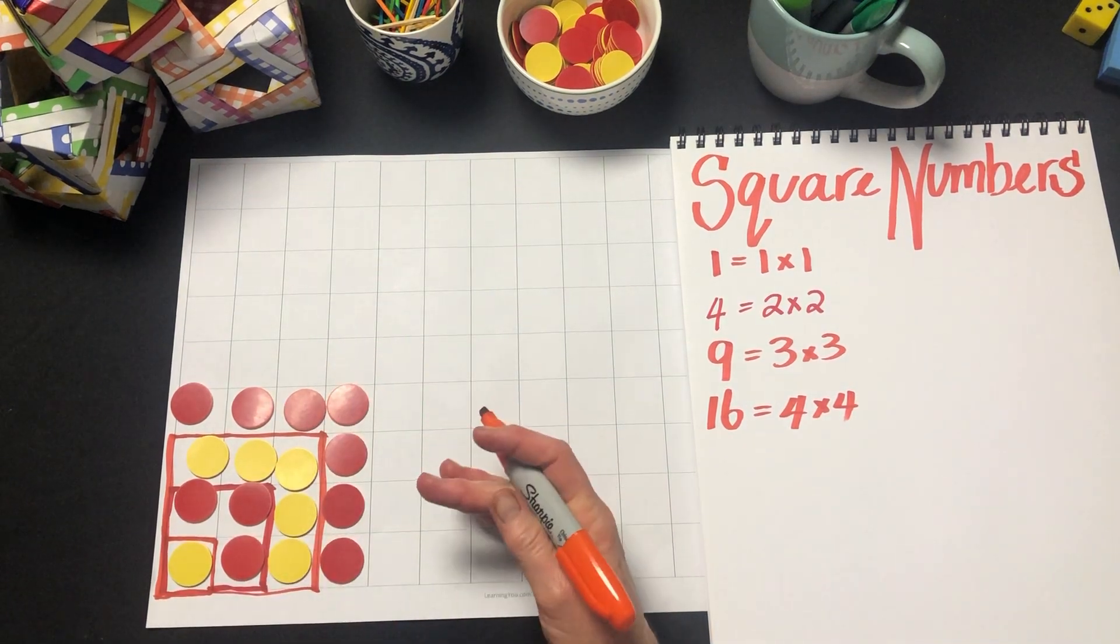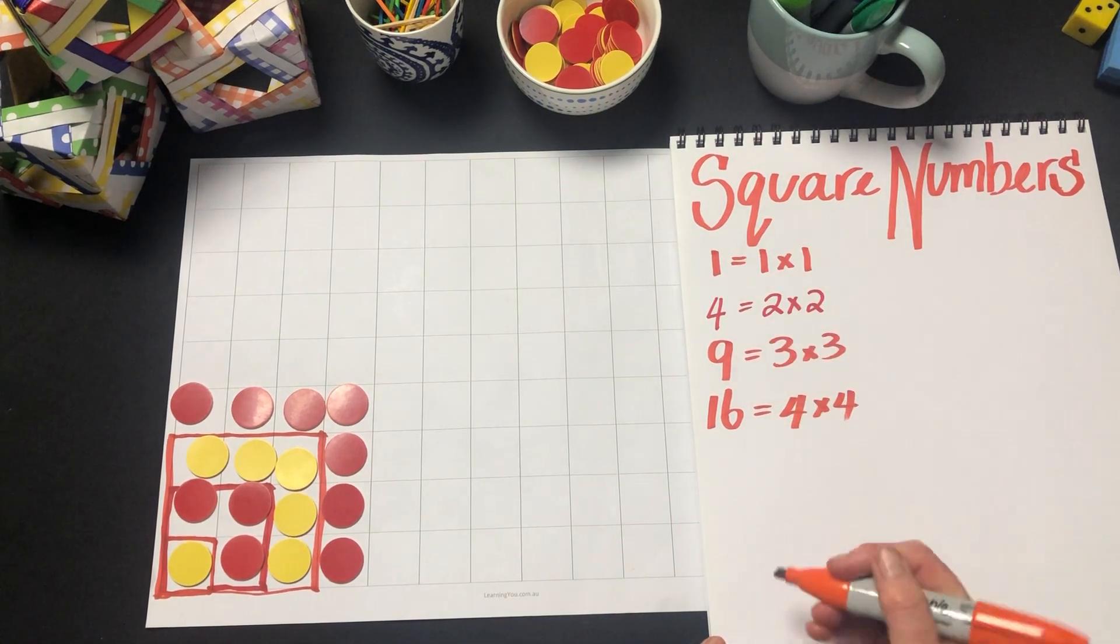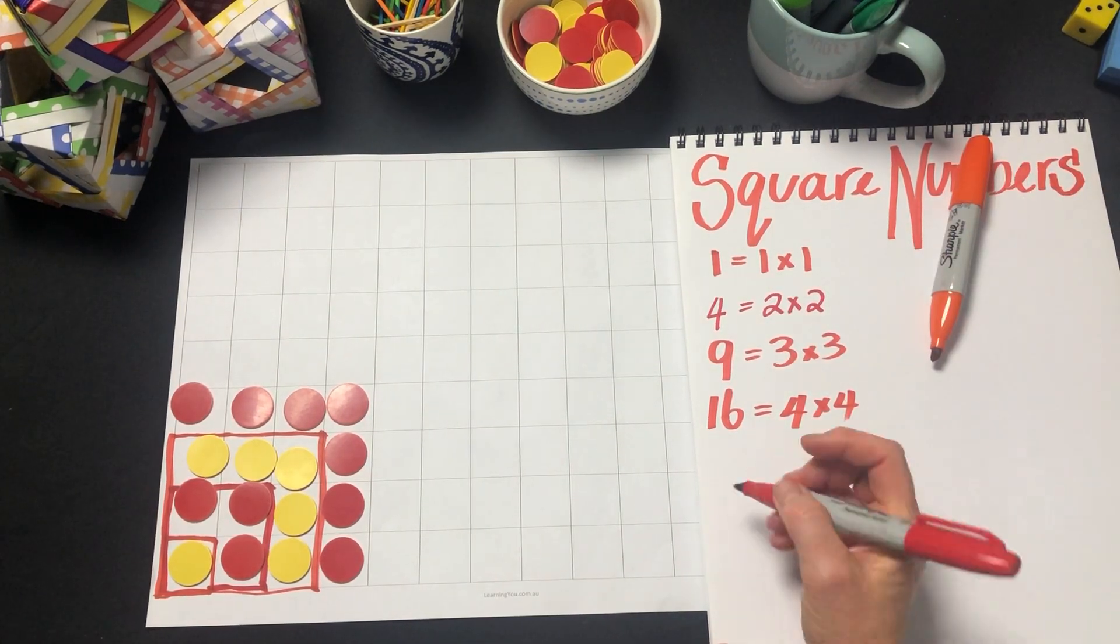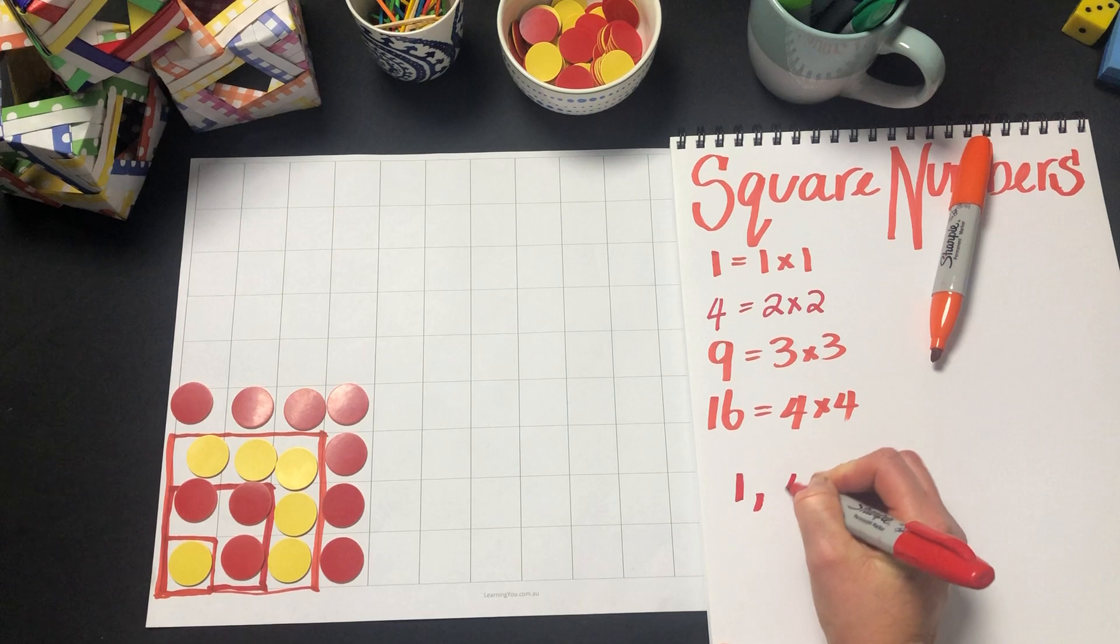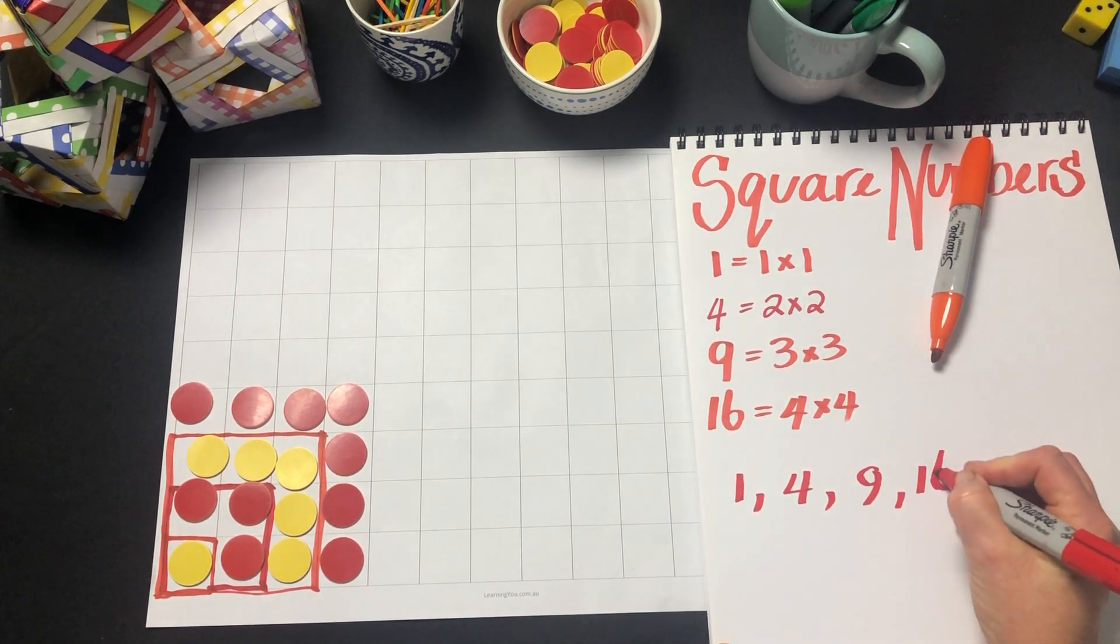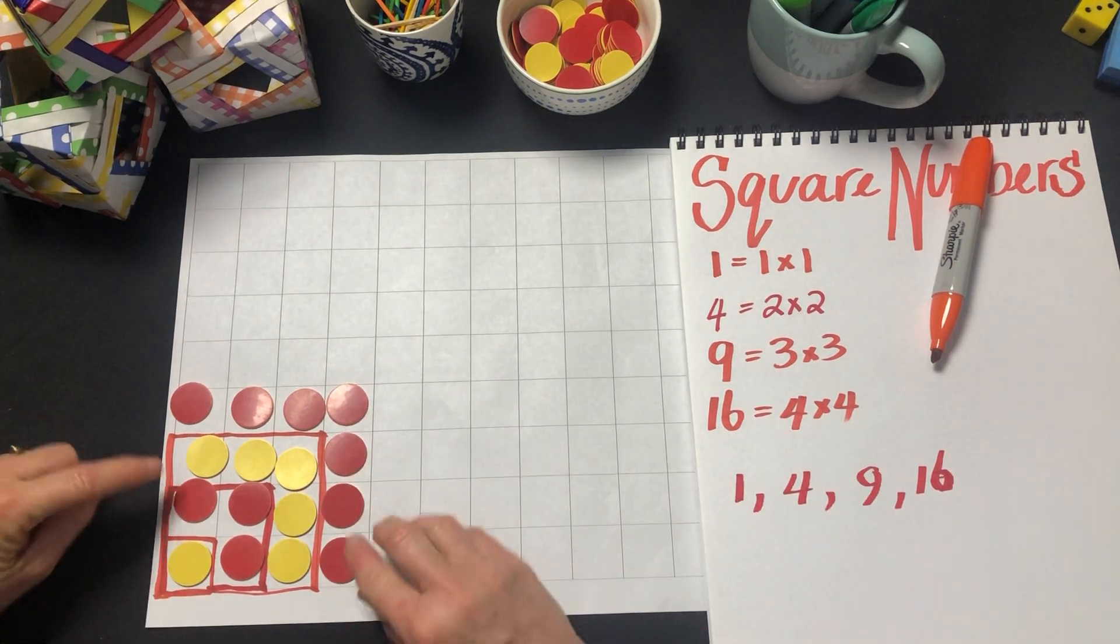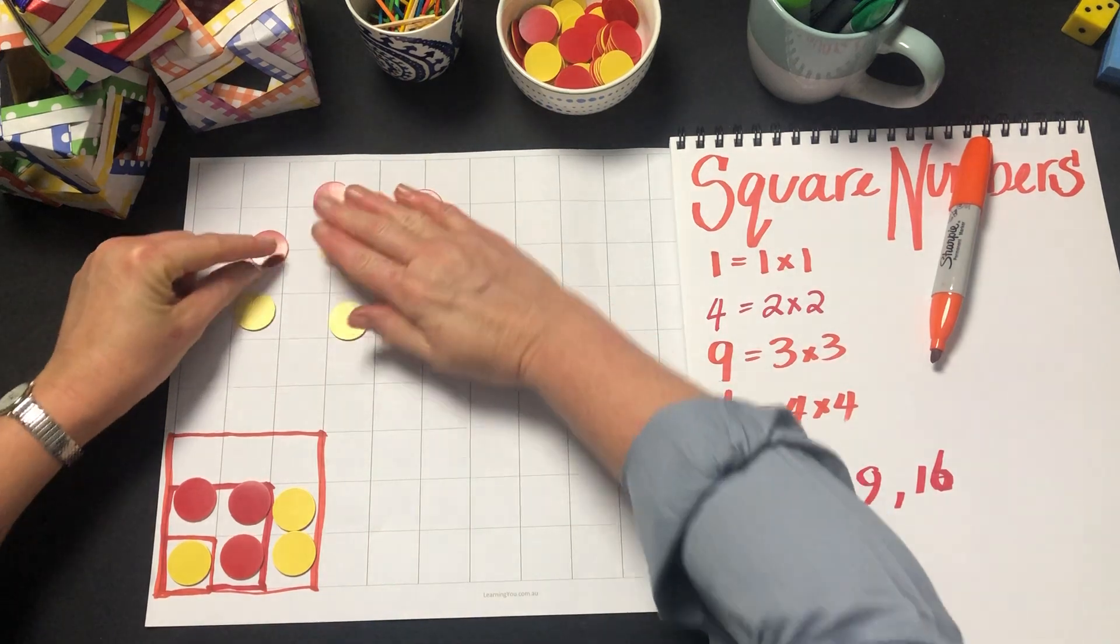What we can also see is an additive pattern that happens here. So often we'll give students sequences of numbers like 1, 4, 9, and 16, and we'll ask them what's the pattern.